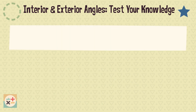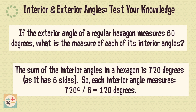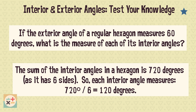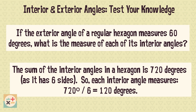Question 6. If the exterior angle of a regular hexagon measures 60 degrees, what is the measure of each of its interior angles? The sum of the interior angles in a hexagon is 720 degrees, as it has six sides. So each interior angle measures 120 degrees. You can also take the size of the exterior angle away from 180 degrees to find the interior angle.